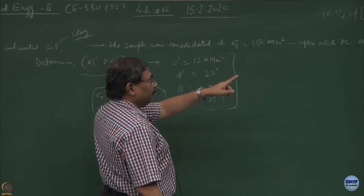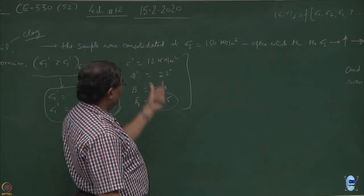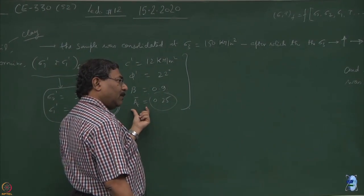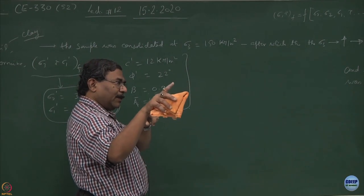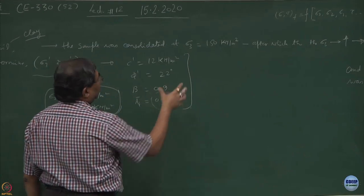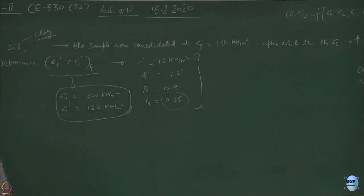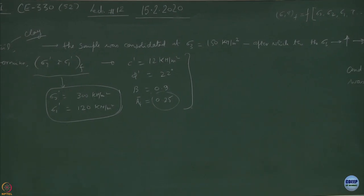Delta sigma 3 becomes 150. You know the B parameter, you can go ahead with all those things. AF prime is known. So you know delta sigma 1, delta sigma 3, try to fit in that Mohr circle within this envelope. That is it. Do both the ways numerically as well as graphically.